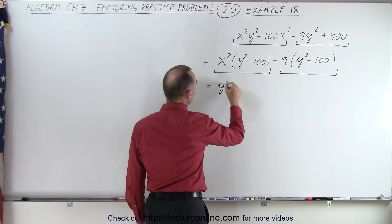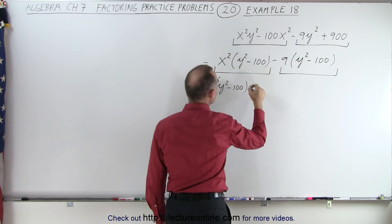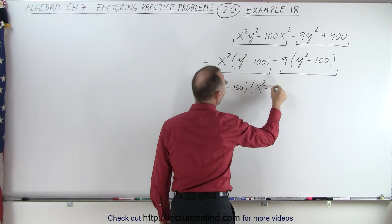So we have y squared minus 100. And then what we have remaining is x squared minus 9.